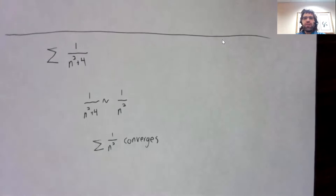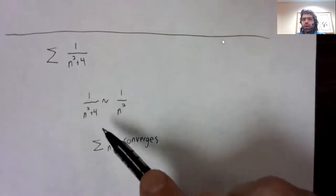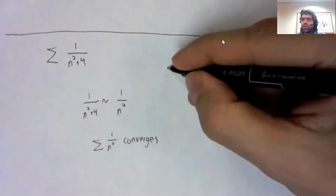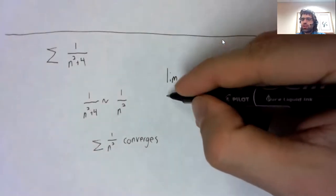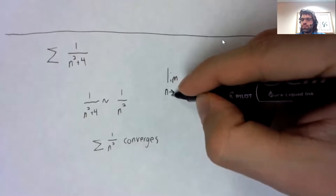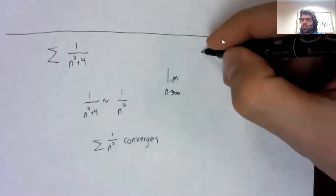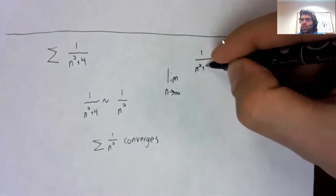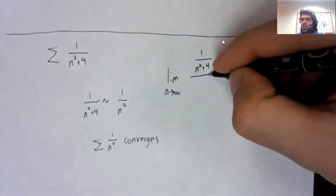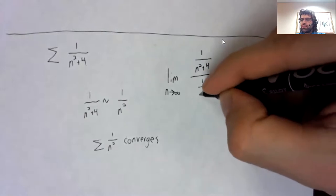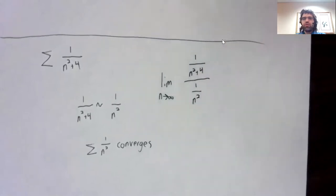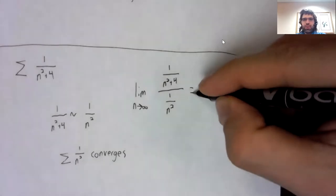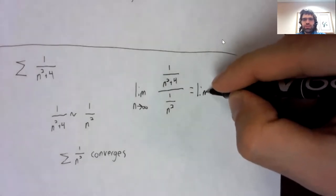And one over n squared is a p series, which converges because p is greater than one. However, I have to formalize this intuition. The way that we show that two series are similar is to take the limit, limit of their ratios.